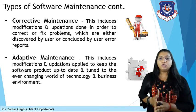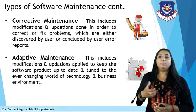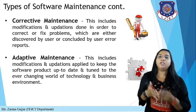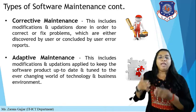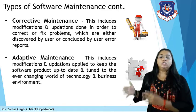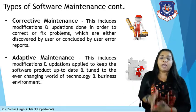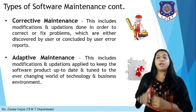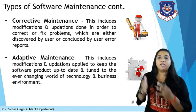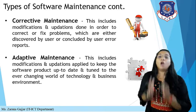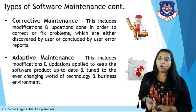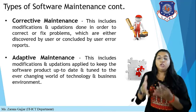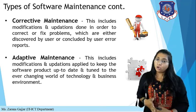Next is adaptive maintenance. This includes modifications and updates applied to keep the software product up to date and tuned to the ever-changing world of technology and business environment. For example, if you developed your software in C language and the market now needs Python, you are modifying and adapting to that market demand — updating your software accordingly. That is adaptive maintenance: adapting to new technology.